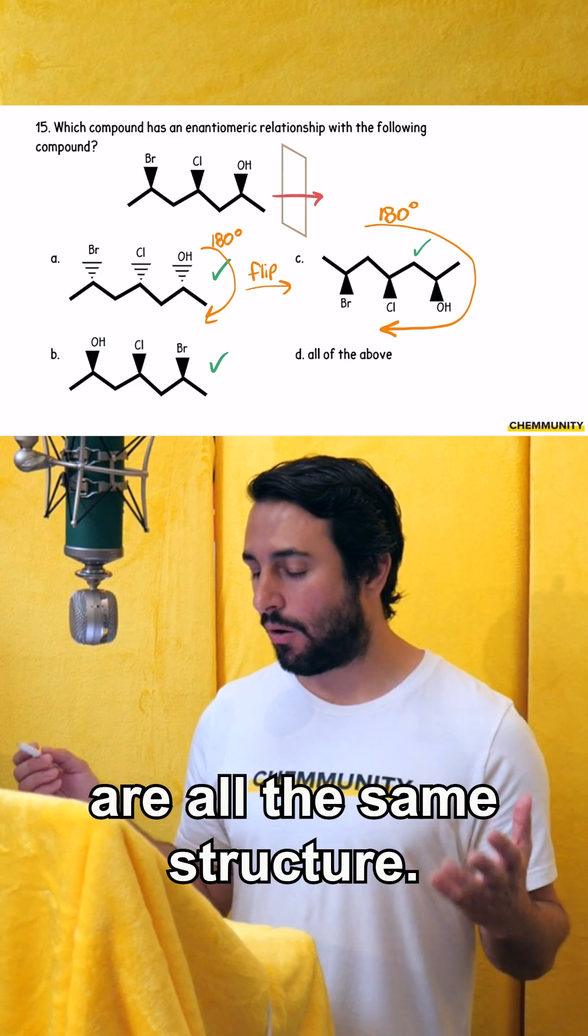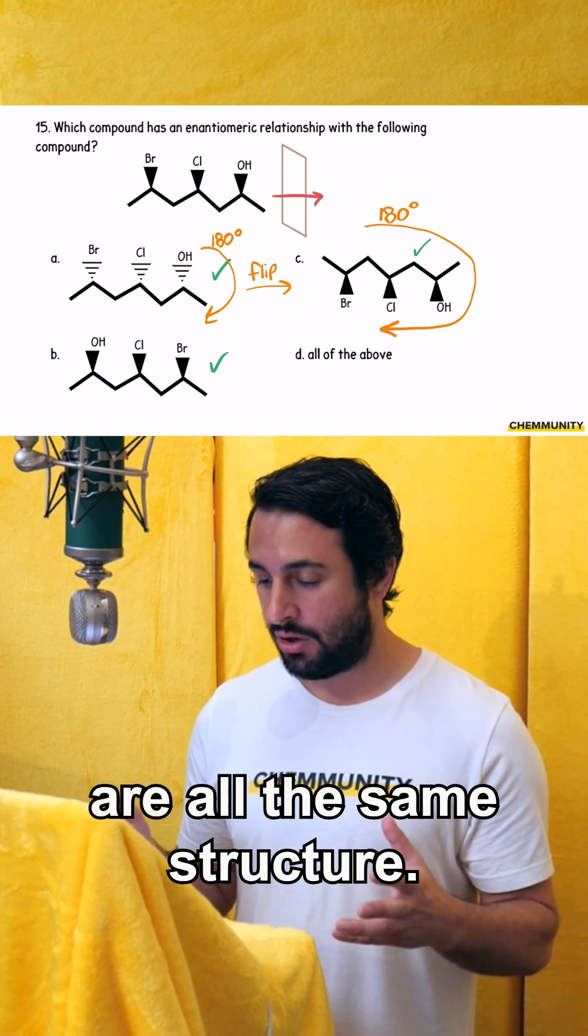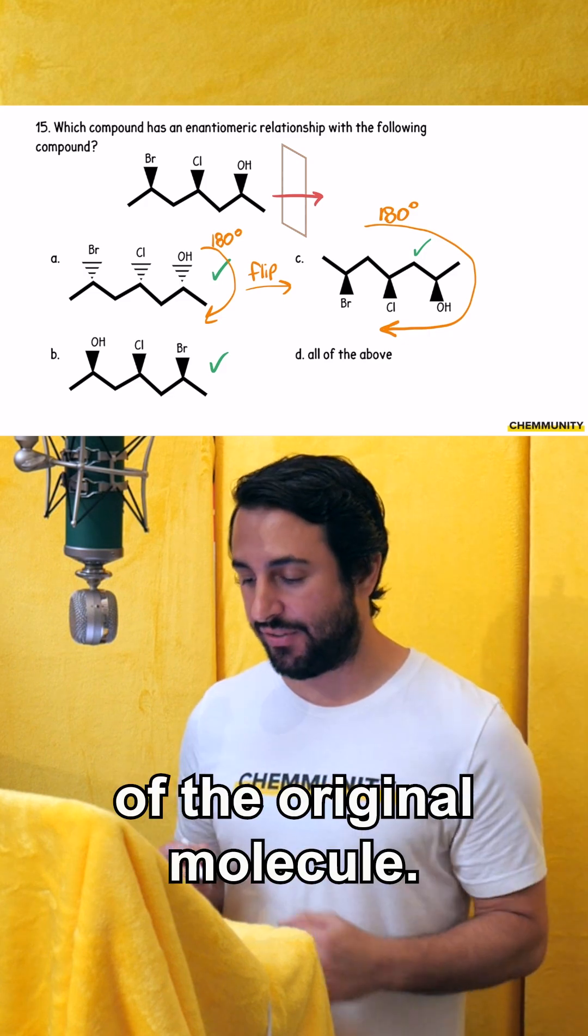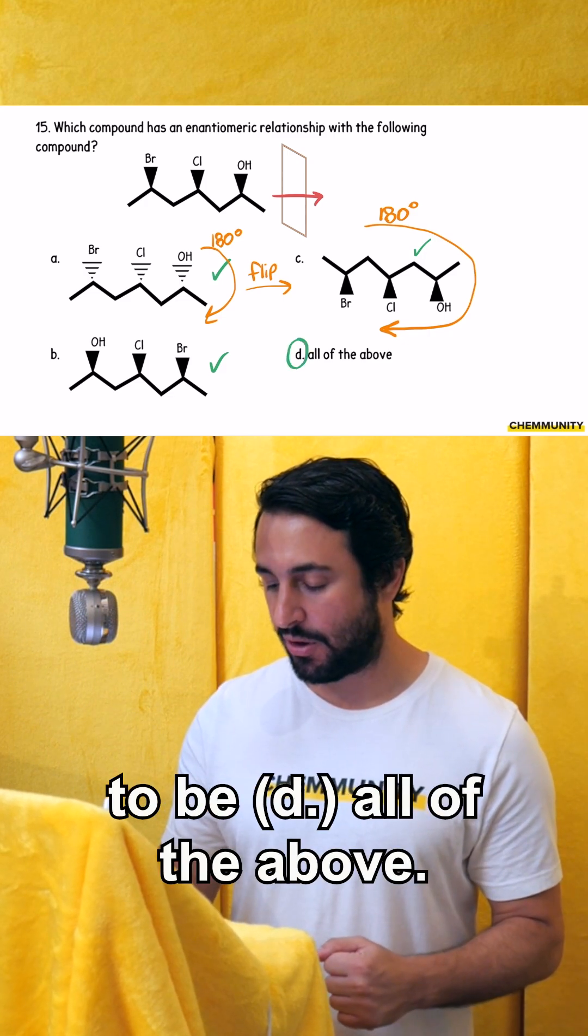A, B, and C are all the same structure and they're all the enantiomer of the original molecule. So this one is going to be D, all of the above.